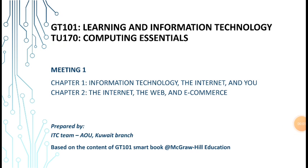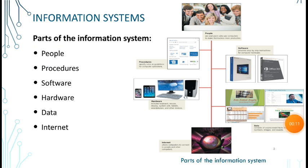This is Chapter 1 of the course GT101: Learning and Information Technology. Chapter 1 is about information technology, the internet, and you. We have the information system, which is a set of components that receive data, process it, and store it, then provide information.